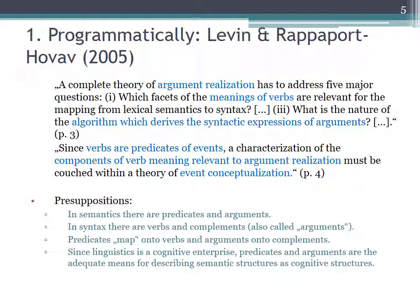And in the basic case, predicates map onto verbs and arguments onto complements. And since we all know that linguistics is a cognitive enterprise, predicates and arguments are the adequate means for describing semantic structures as cognitive structures.